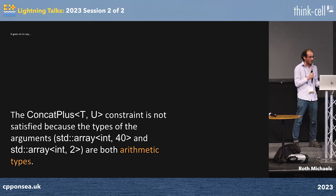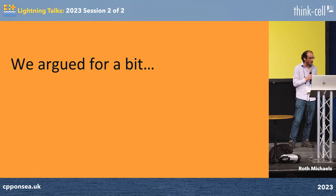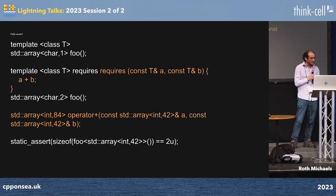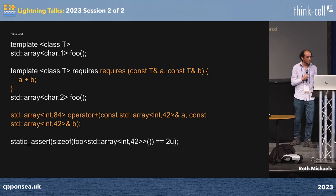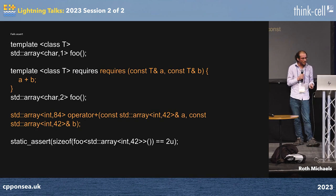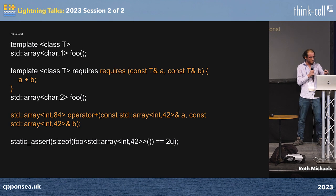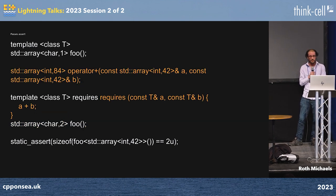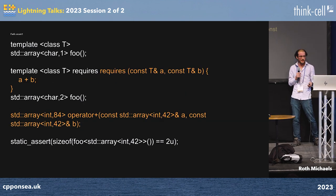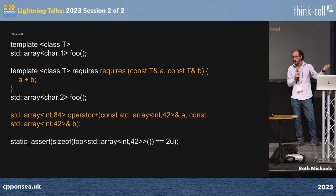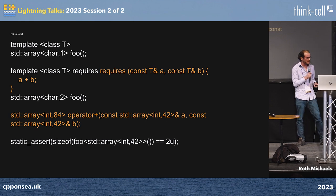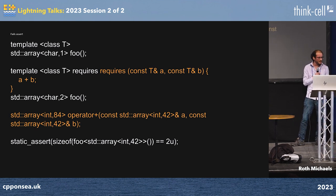I figured it out by trying a bunch of examples, saw when it worked and when it didn't. Here's an example that does not work when the plus is below the requirement, and when I put the plus above, it does work. Again, this all worked in MSVC, but not in GCC and Clang.